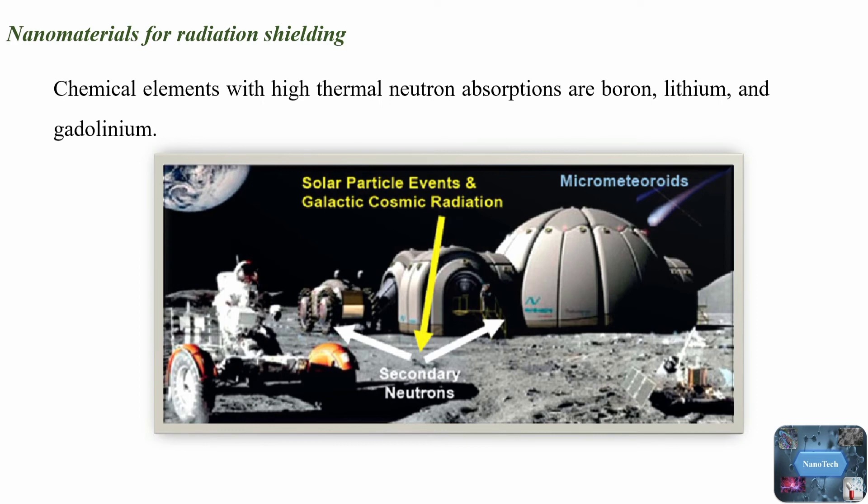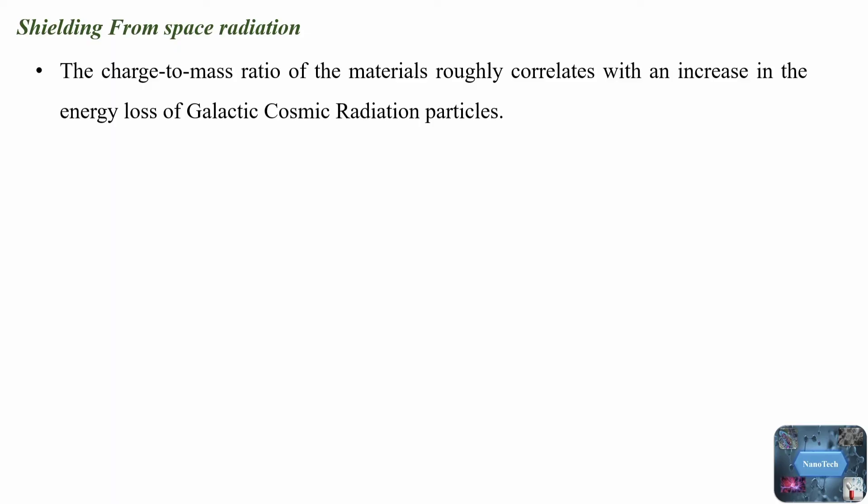Shielding from space radiation. Basically, galactic cosmic radiation particles, which are positively charged particles, mostly interact with materials through coulomb interactions with their negative electrons and positive nuclei, and to a much lesser amount through atomic nuclei collisions. For these reasons, the charge-to-mass ratio of the materials roughly correlates with an increase in the energy loss of galactic cosmic radiation particles. Hydrogen, with the highest charge-to-mass ratio of any element, provides the best shielding.